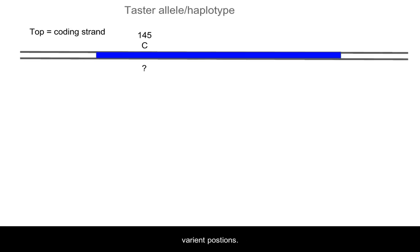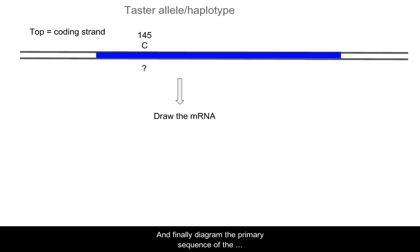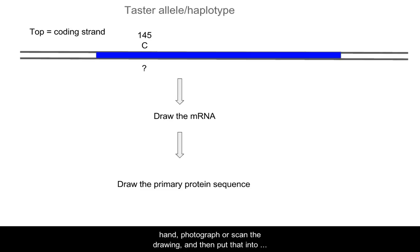You can work out what is on the template or non-coding strand. Repeat this process for all variant positions. Then diagram and label the corresponding messenger RNA — make sure it looks different from the DNA. And finally, diagram the primary sequence of the resulting protein; again make sure it looks different. Remember to draw big. I actually prefer you draw by hand, then photograph or scan the drawing and put it into your assignment document.